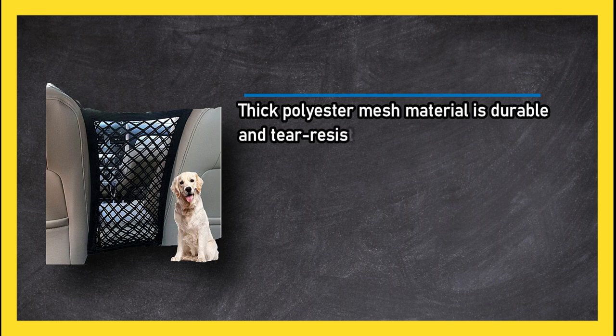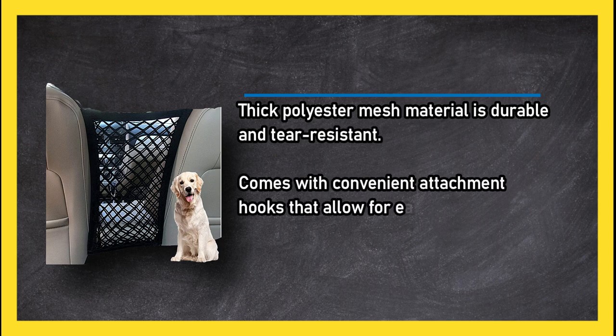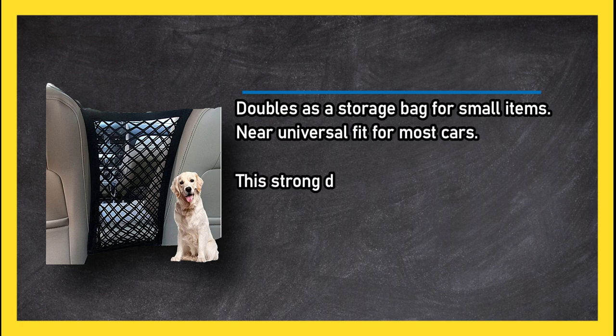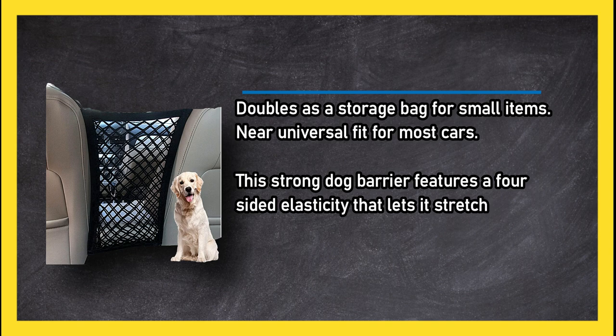At number two, Dykson Dog Car Net Barrier. Thick polyester mesh material is durable and tear resistant. Comes with convenient attachment hooks that allow for easy setup. Doubles as a storage bag for small items. Near universal fit for most cars.